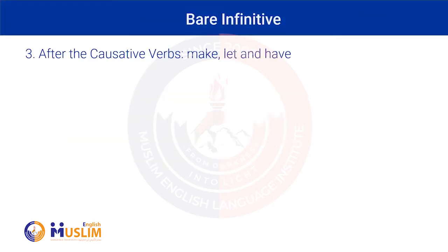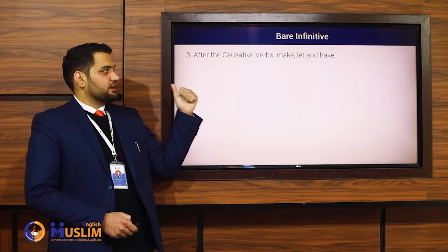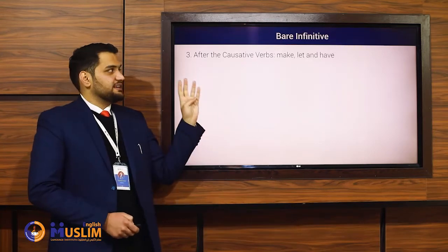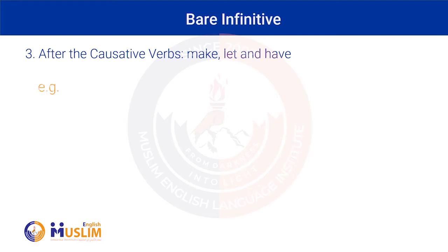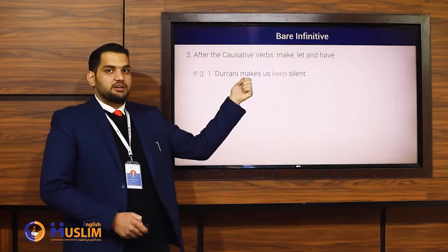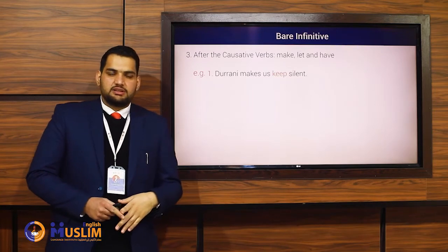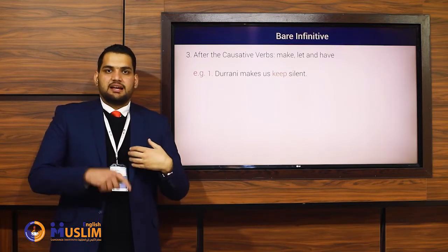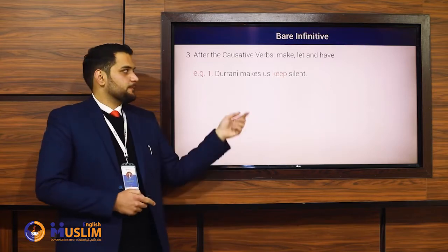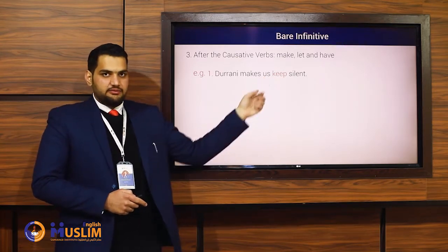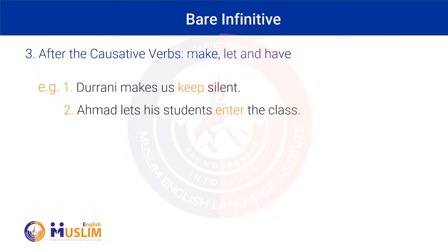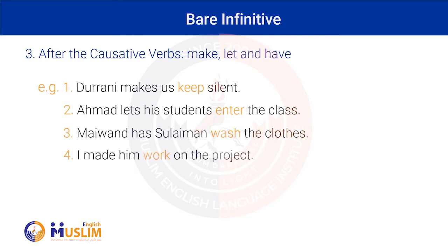The third case of bare infinitives is after the causative verbs — not all causative verbs, specifically 'make,' 'let,' and 'have.' A causative verb is a verb that causes another person to do something. For example: 'Durrani makes us keep silent' — here 'keep' is a bare infinitive. 'Ahmed lets his students enter the class.' 'My wife has Suleiman wash the clothes.' 'I made him work on the project.'